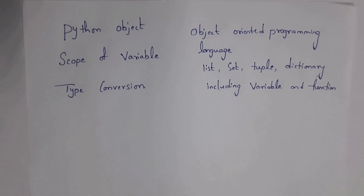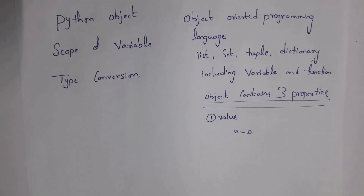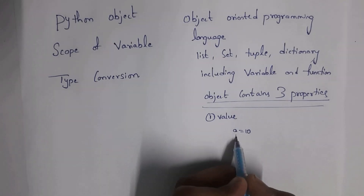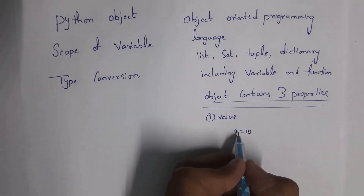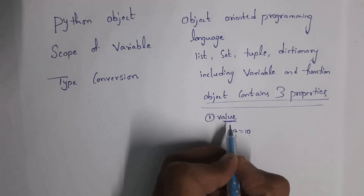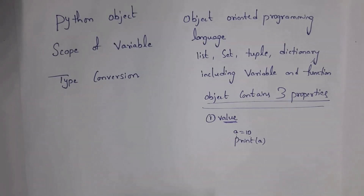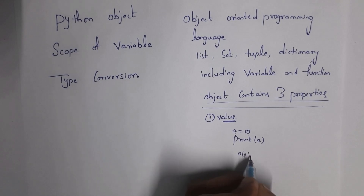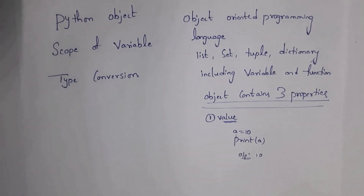Python is an object-oriented programming language, meaning everything in Python is an object — like lists, sets, tuples, dictionaries, and even variables and functions. A Python object contains three properties. The first one is value. For example, if I write a = 10, 'a' is an object and contains value 10. When you write print(a), you get output 10.